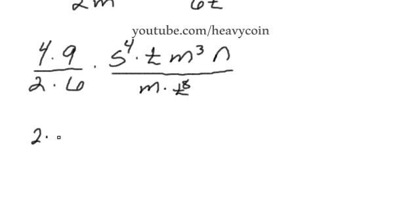So 4 can be broken up as 2 times 2 and 9 can be broken up as 3 times 3. We're going to rewrite that 2 there and this 6 can be broken up as 2 times 3. So these have been factored into a product of primes.